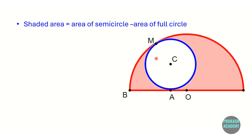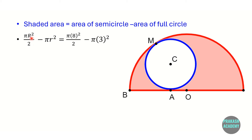Now that we know R equals 8, we can calculate the shaded area. The shaded area equals the area of the semicircle minus the area of the full circle. Area of semicircle equals πR²/2 equals π times 64 divided by 2 equals 32π. Area of the full circle equals π times 3 squared equals 9π. So the shaded area equals 32π minus 9π equals 23π.